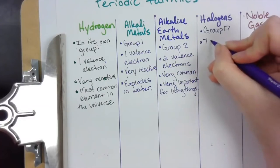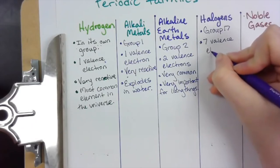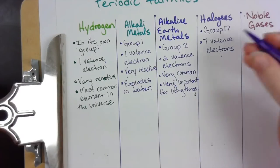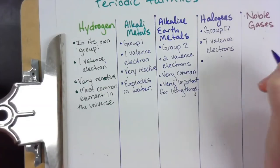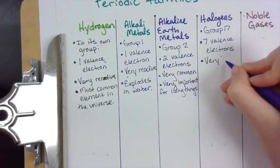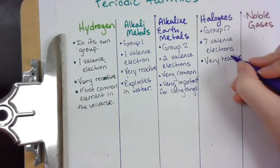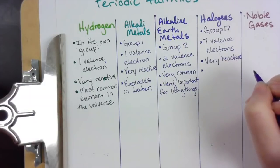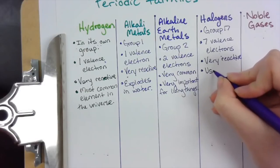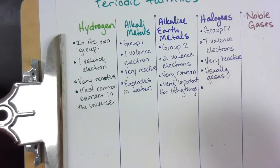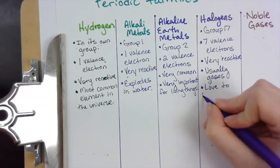Hopefully you said 7 valence electrons for group 17. Remember, we're trying to get to a full shell of 8. So if an element has 7 valence electrons, it's really close — these elements are also very reactive, they really want to get to 8. All of the elements in group 17 are usually found as gases, though sometimes iodine is found in liquid form. And one of the things we notice about the halogens is that they love to bond with the alkali metals.